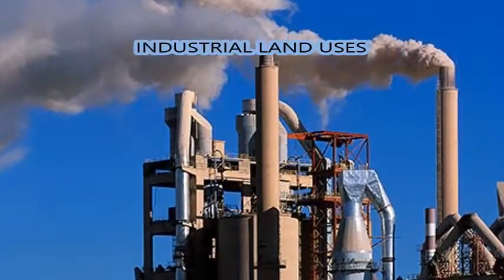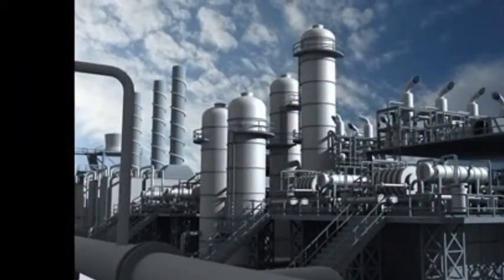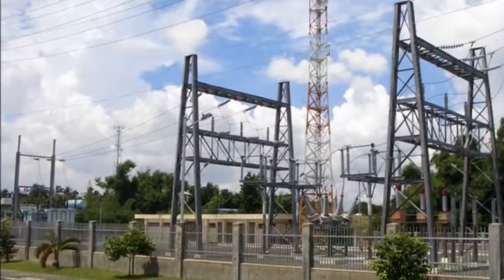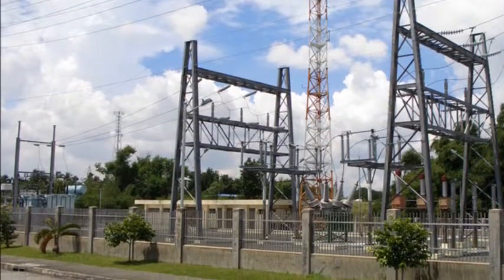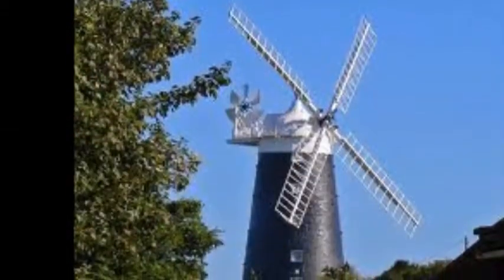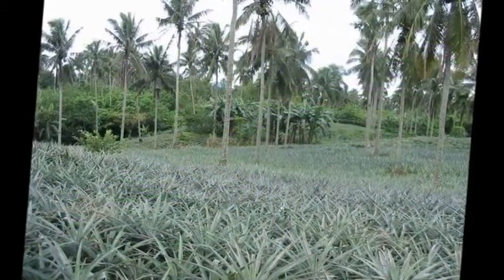Industrial land uses refer to the siting of factories or petroleum refineries and utilities such as electricity generating stations and water and sewage treatment. This can also include mines, smelters, and mills.